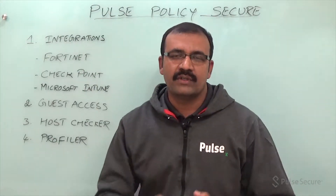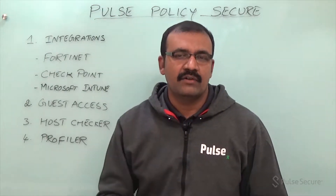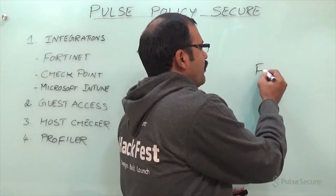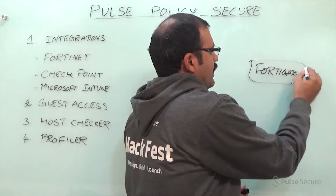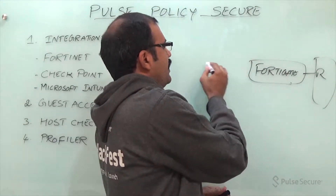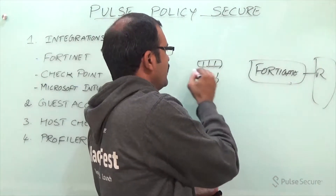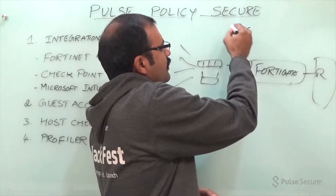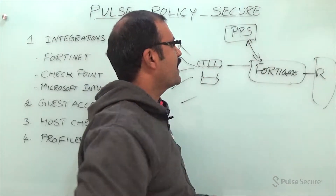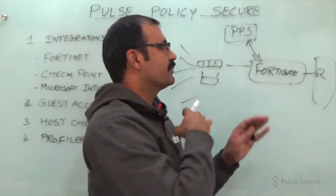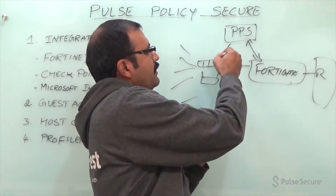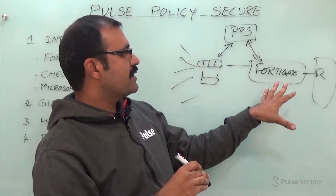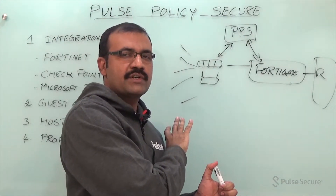The FortiGate Firewall integration is mainly based on admission control based on threat alerts. Let's say FortiGate Firewall is deployed at the customer site, with resources behind it and a switch or WLC where all endpoints are connected. Pulse Policy Secure is also deployed and leverages syslog mechanisms to get information about threat alerts received on the FortiGate products. This allows PPS to control user access based on the threat information received — whether to block certain user sessions or terminate the session.